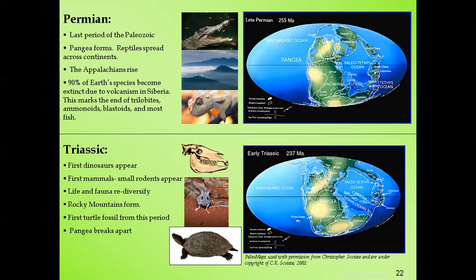During the Permian period — the last period of the Paleozoic — Pangaea formed as different continents came together. Reptiles spread across the continent. Because the continents were joined together, animals could travel across them, which is consistent with Alfred Wegener's continental drift theory — explaining how different species spread across what are now separate landmasses.